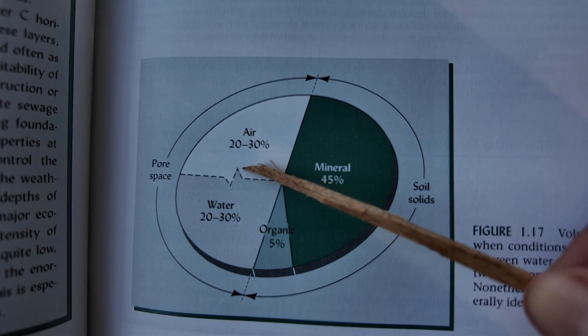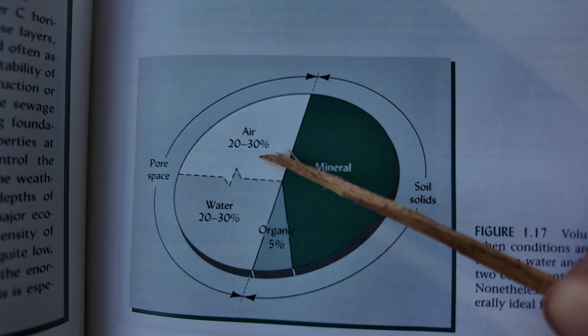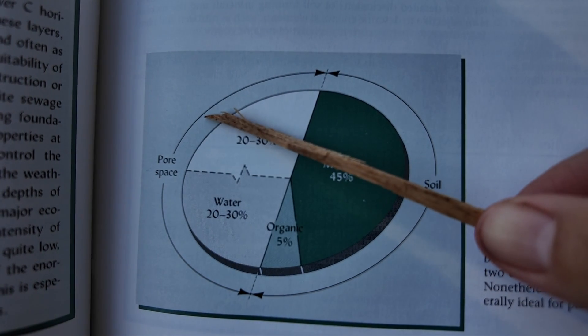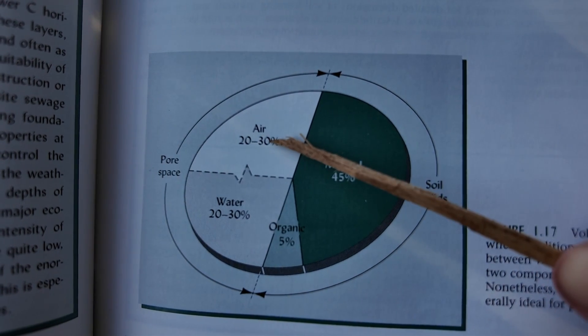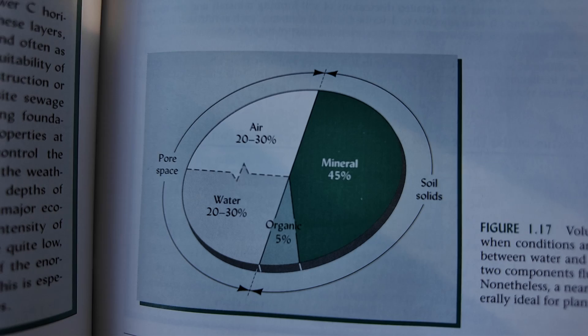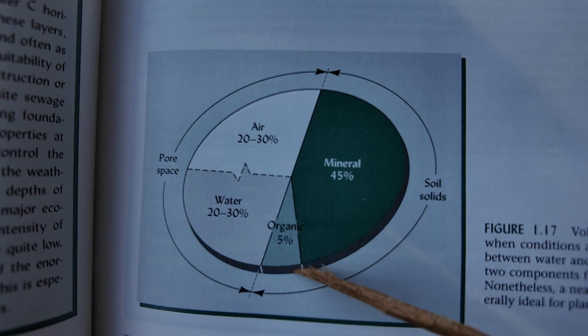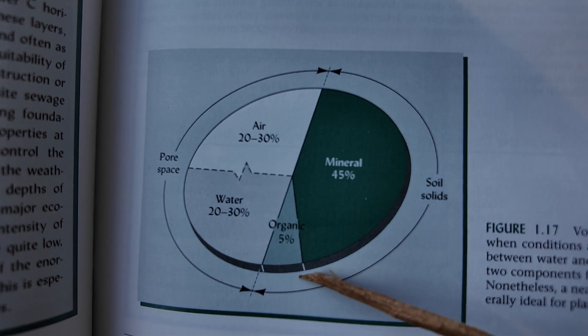And then on the side with the pore space should be about half and half, 25% each of air and water. But that's going to fluctuate if you just irrigated or if it just rained then you'll get more water for a little bit and then it'll drain out and then you'll have more air again. And this is in a good soil. You can have really bad soils where you have a lot less pore space and you have very little organic matter.